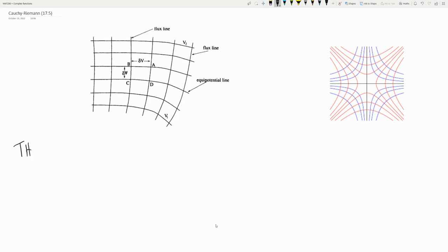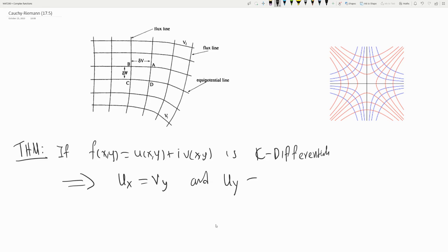We have the following theorem. If f(x,y) with real part u and imaginary part v is C-differentiable, then the partial derivative in x equals partial in y, and partial in y equals minus partial in x for the imaginary part.